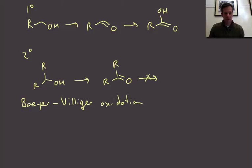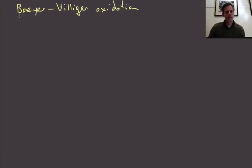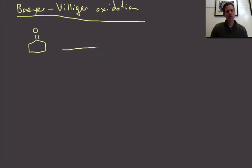This is a somewhat peculiar looking process to be sure, but it has definite utility. What we're going to do is take a ketone—I'll just pick cyclohexanone—and we're going to treat it with our old friend MCPBA.